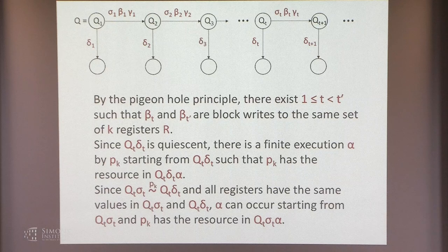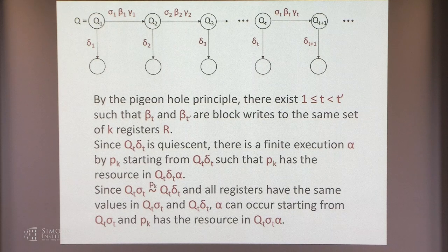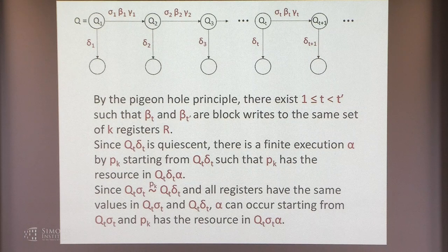We have this setup where all the circles are quiescent configurations. By the pigeonhole principle, there exists t less than t-prime such that beta_t and beta_{t'} are block writes to the same set of K registers. We're assuming at most N registers, and there's only a finite number, so eventually if we have N-choose-K plus one of these block writes, two of them will write to the same set of registers.